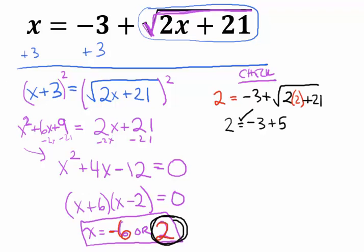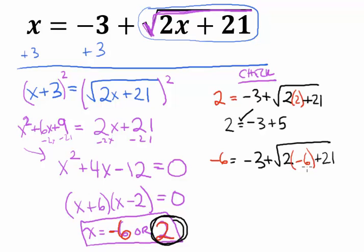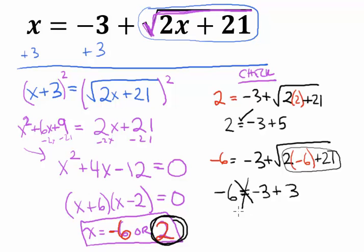Now check x equals negative 6: does negative 6 equal negative 3 plus the square root of (2 times negative 6 plus 21)? That's negative 3 plus the square root of (negative 12 plus 21), which is the square root of 9, which is 3. So is it true that negative 6 equals negative 3 plus 3? That is not true, so this is incorrect.